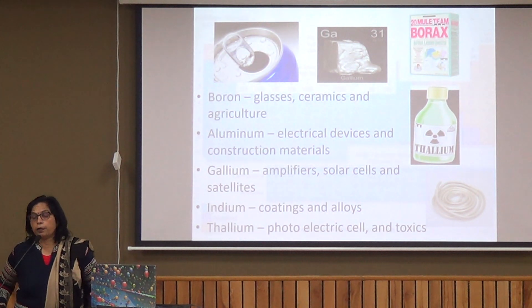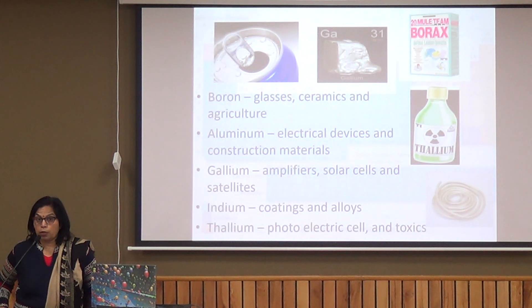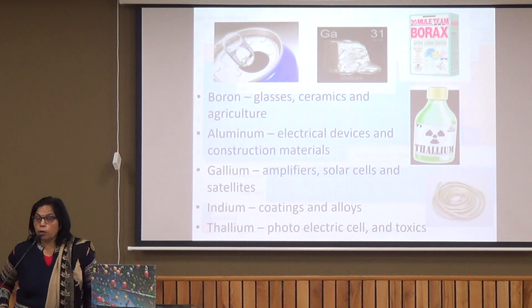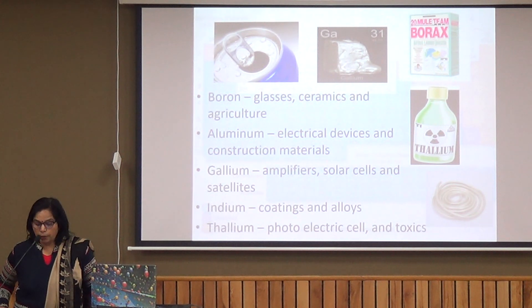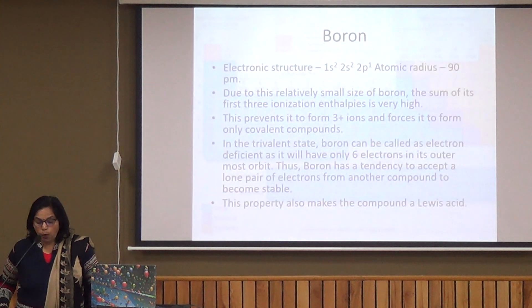Boron is used to make glass, ceramics and in agriculture. Aluminium is used in electrical devices and to make aircraft bodies because of its lighter weight and its conductivity — which is twice that of copper — making it suitable for transmission cables. Gallium is used to make amplifiers, solar cells and satellites.